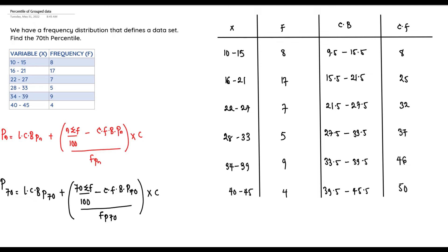Now we locate the 78th percentile of our data set. We compute 78 × ΣF / 100, which equals 70 × 50 / 100 = 35. So the 78th percentile is located at the 35th position of the data set.